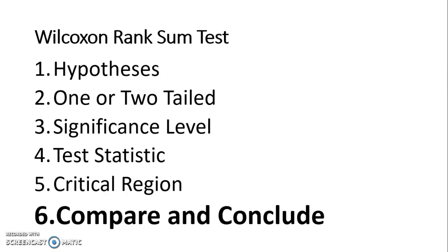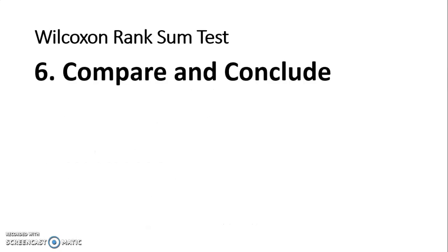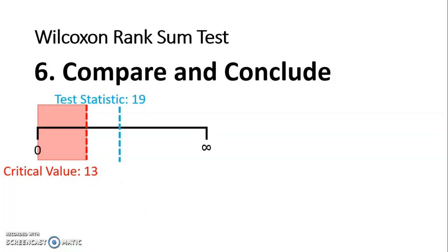So finally, we are going to compare and conclude. This is a distribution-free test, so we cannot draw a normal distribution or anything like that. So I am just going to draw myself a line from zero to infinity. I am going to mark the critical value of 13. And anything less than or equal to that is my critical region, so my reject zone. Then I am going to plot my test statistic, which for this one is 19. And you can see that that does not fall in the reject zone, so we accept H0.